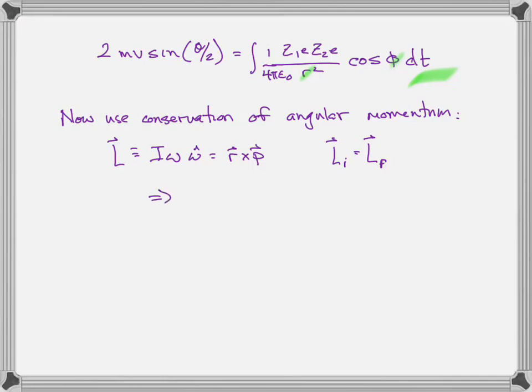Therefore, we can write I omega. This is a point particle, so I is MR squared, that's the moment of inertia for a point particle. Omega is d phi dt. Aha, now we're relating phi to time. Omega is just d phi dt, and that is equal to R times P, which is BMV.